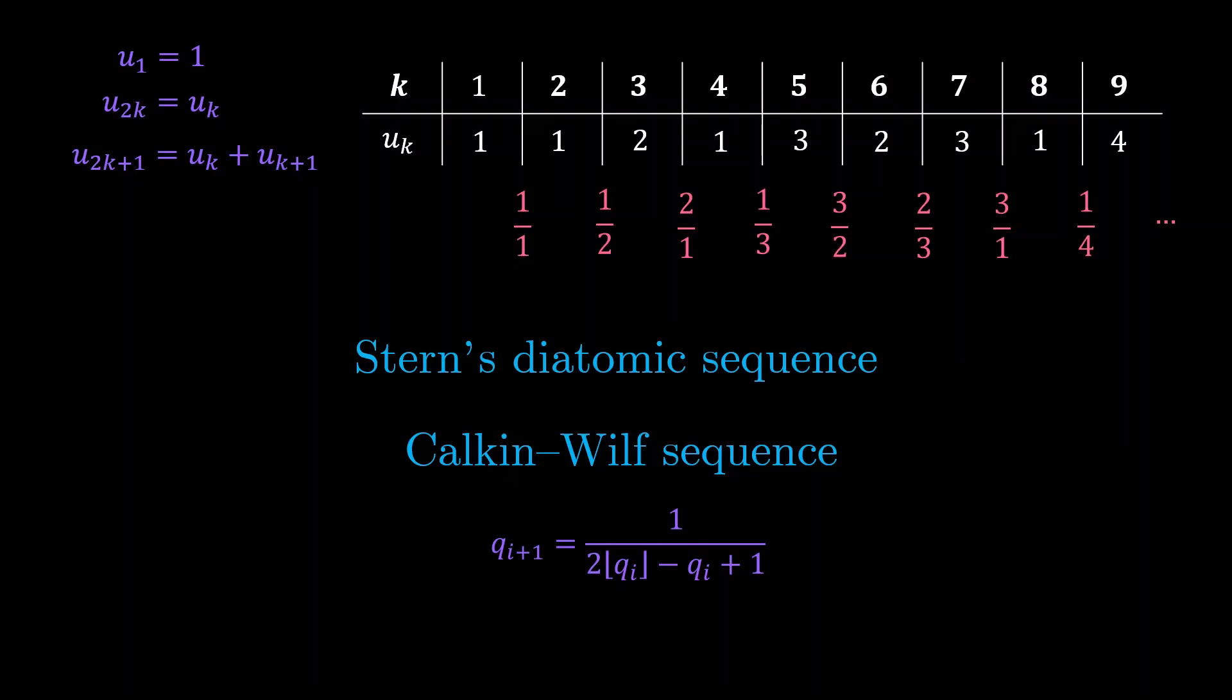Instead, we will prove that the Calkin-Wilf sequence contains each positive rational number exactly once. And what is even more amazing is that this can be done in a sequence of five steps that doesn't involve any complicated theory. So let's take a look.